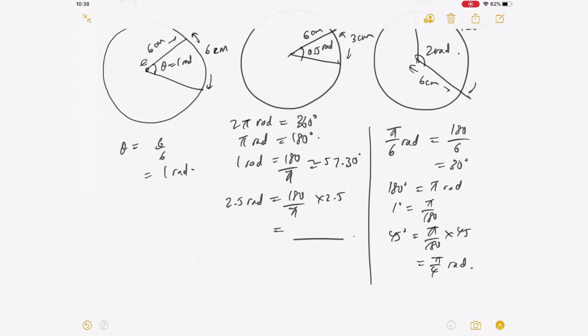Now you can leave it in π radian or you can change to decimal. This should be 0.7 something. Okay, all right. So this is the first part: converting from degree to radian and vice versa.